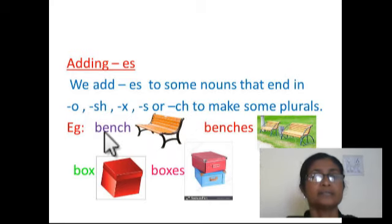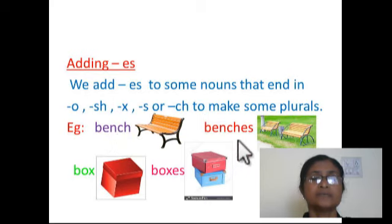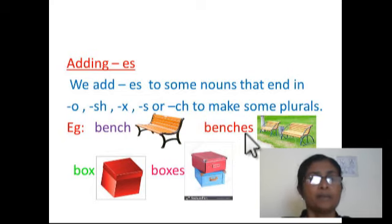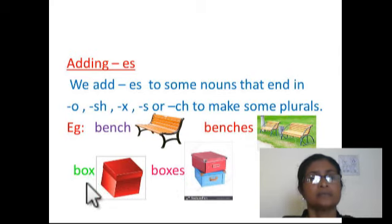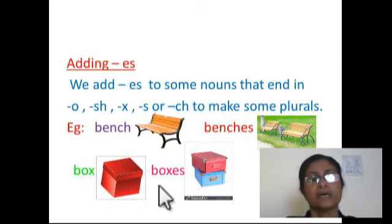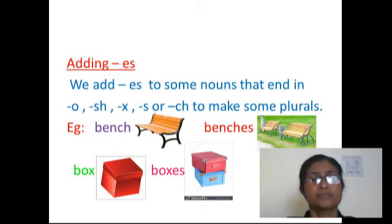For example, bench. The last letter of bench is ch. After ch we add es, we would get the plural form: benches. Box — the last letter of box is x. After x we add es, we will get the plural form: boxes.